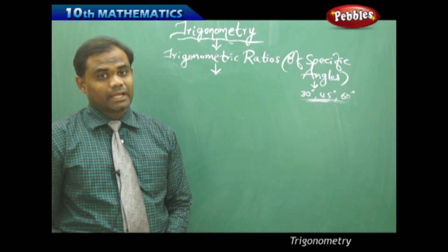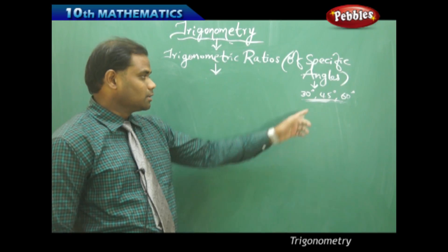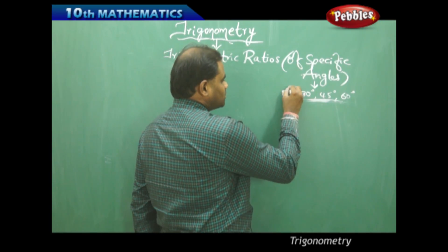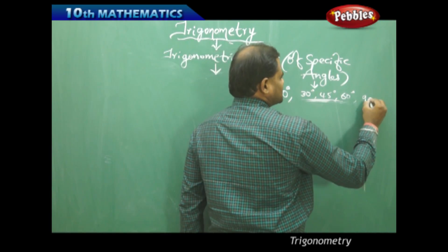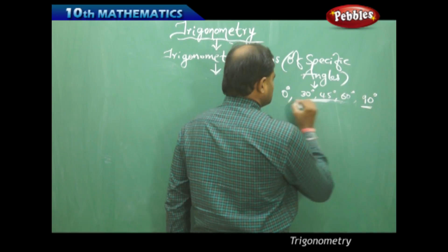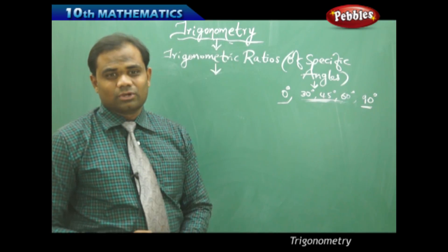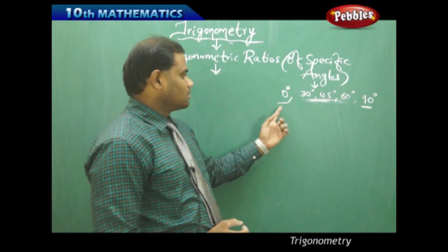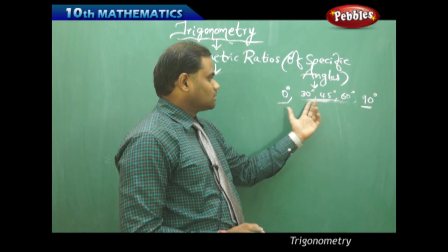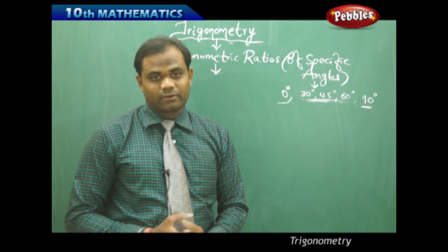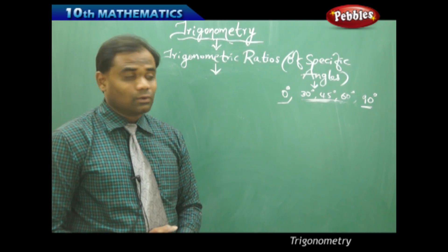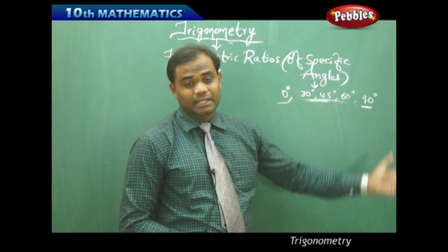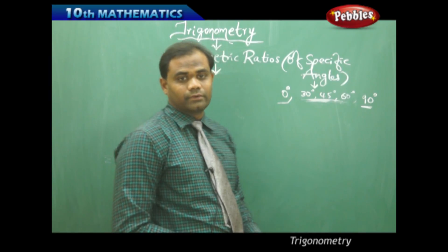Now let's take two more special angles included along with 30, 45 and 60 — that is 0 and 90 — as exclusively special angles, because 0 and 90 have their own special cases which are put apart from 30, 45 and 60. Let's see how we can find the trigonometric ratios for 0 and 90 degrees, starting with 0 degrees.